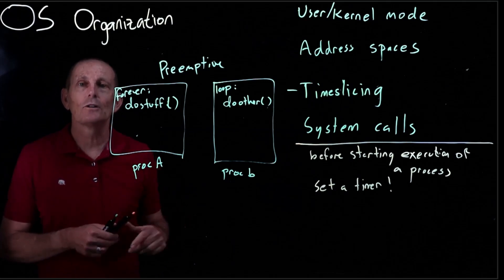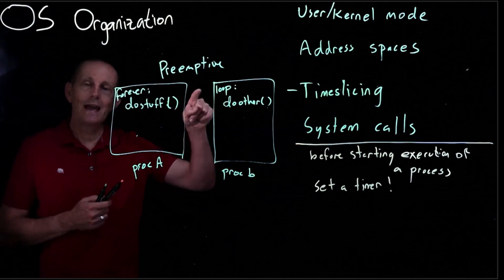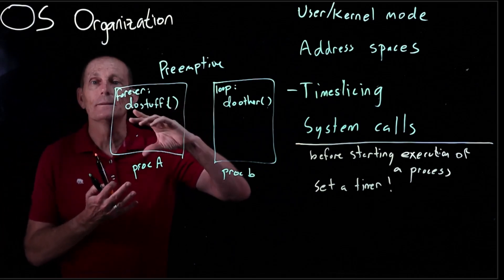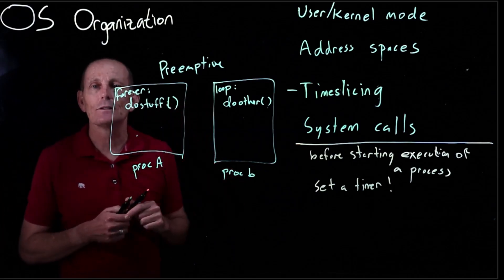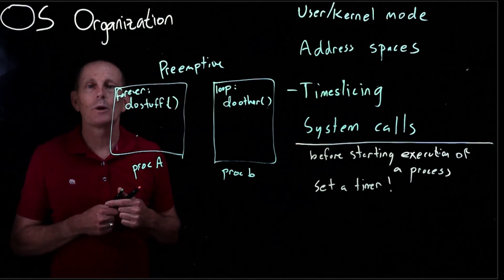The kernel can then go look and say oh wait I got a timer interrupt. I had set A running. A has exceeded its quantum. That is the amount of time I gave it to run. Therefore I will context switch to another process.